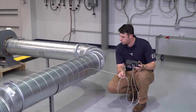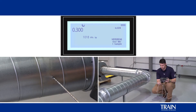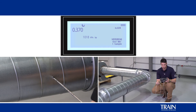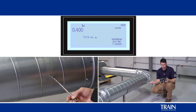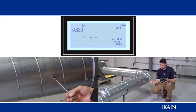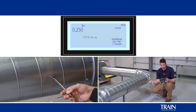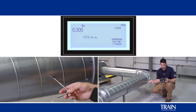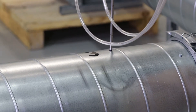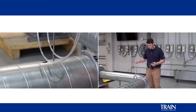Starting with number 1, then number 2, number 3, number 4, number 5, number 6, number 7, number 8, number 9, and number 10, making sure that our pitot tube is properly oriented in the ductwork at each measurement point.